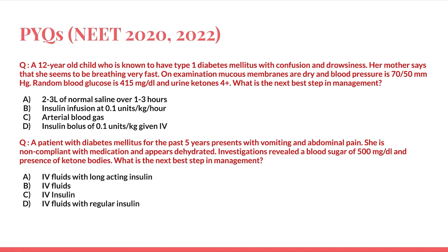Now returning to the questions. In both questions, clinical clues were given pointing clearly towards the diagnosis of DKA. In the first question — the 12-year-old child — clinical features include fast acidotic breathing, dehydration, low blood pressure, high blood sugar, and 4+ urine ketones: a clear-cut case of DKA.